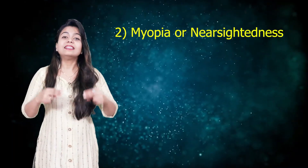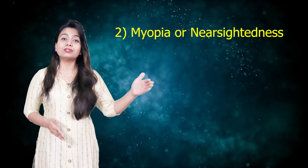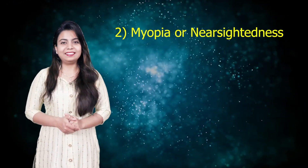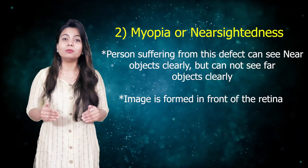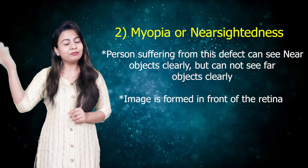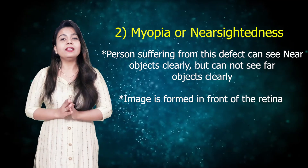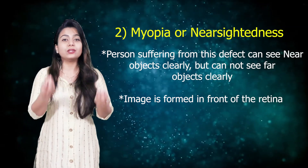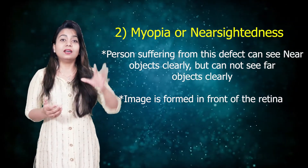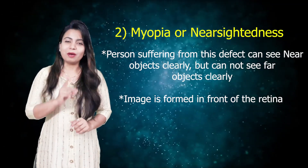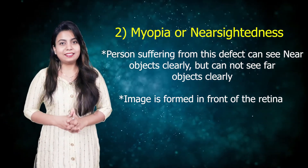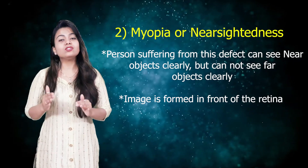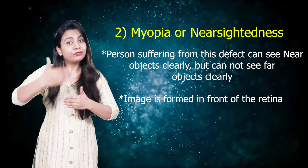Coming to the second category, that is myopia, or nearsightedness. It is exactly opposite to farsightedness. From the name itself, you can identify — a person suffering from this can see near objects clearly but is not able to see far-off objects. This occurs normally in young age people, like teenagers, those who cannot see things written clearly on the board. That is myopia. In this case, the image is formed not on the retina but just in front of the retina.